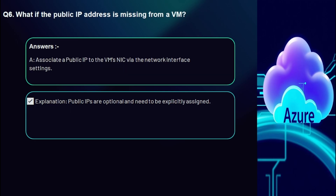Question 6: What if the public IP address is missing from a VM? Associate a public IP to the VM's NIC via the Network Interface settings. Public IPs are optional and need to be explicitly assigned if needed — otherwise, you can access the VM from a VPN.